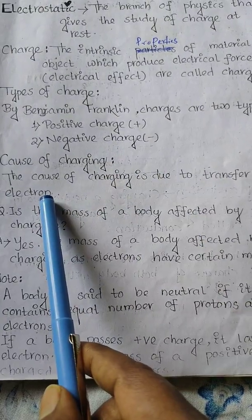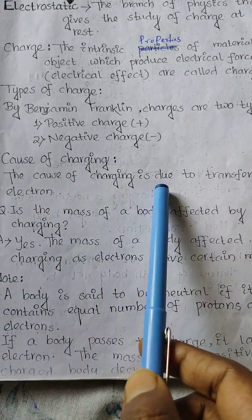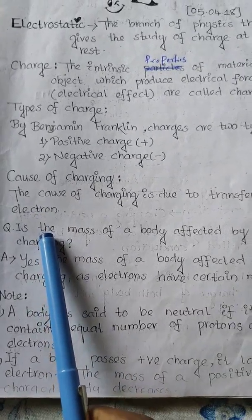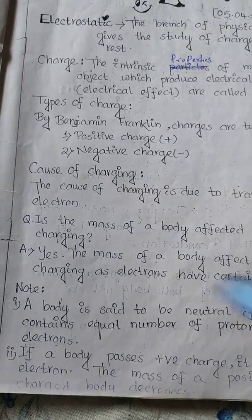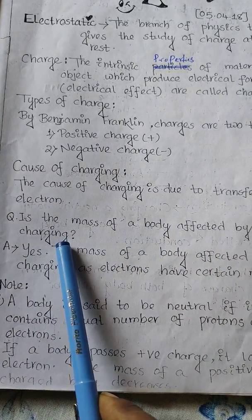Electrons can easily gain energy and come out, so charging happens due to the transfer of electrons.